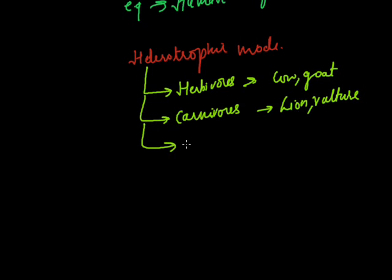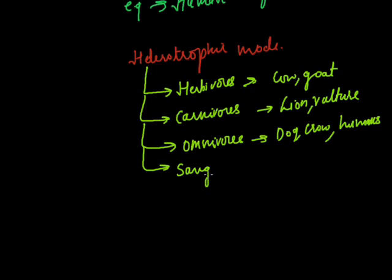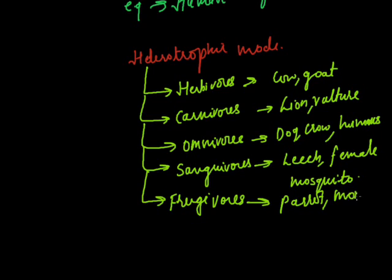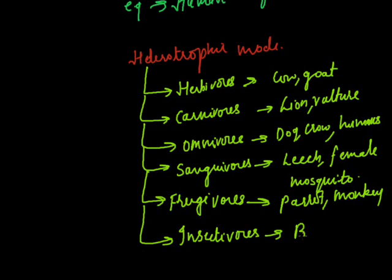The third category includes omnivores, which feed on both plants and animals — common examples are dog, crow, and humans. The fourth category is sanguivores, which feed on blood — examples include leech and female mosquito. The fifth category is frugivores, which are fruit-eating animals like parrot and monkey. The last category is insectivores, which feed on insects — common examples are bats, spiny anteater, and lizard.